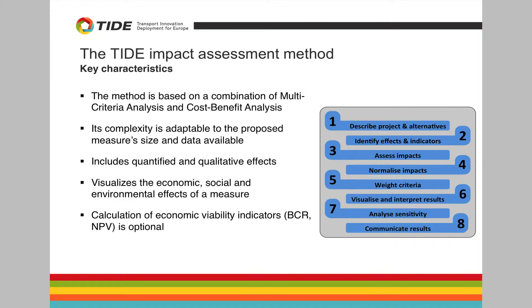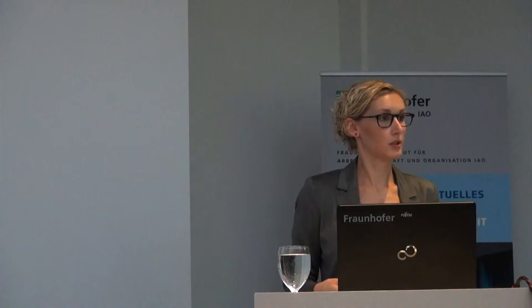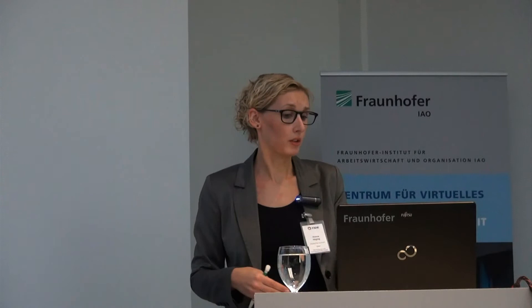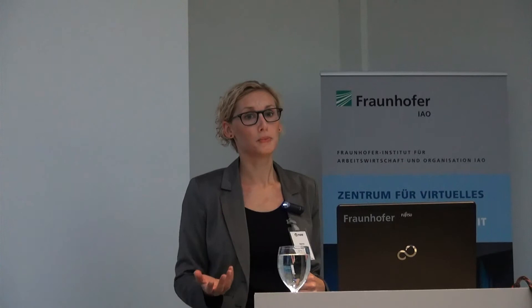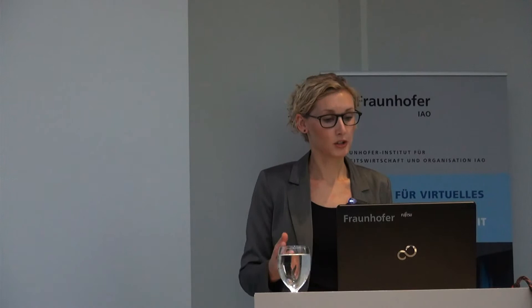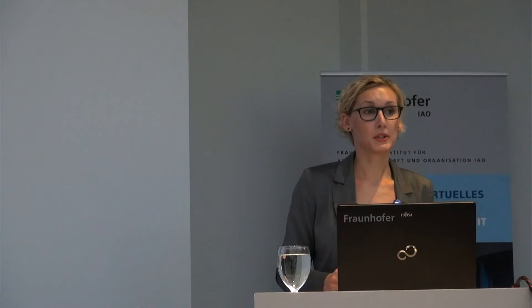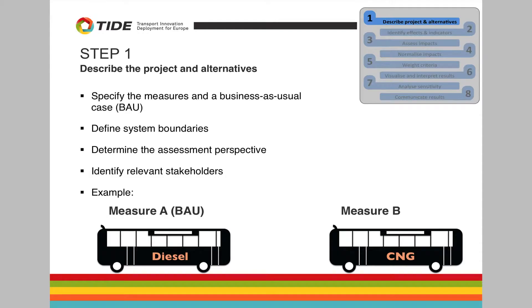The CHIDE impact assessment method includes effects that can be quantified as well as qualitative effects. A key characteristic is that it allows you to visualize economic, social, and environmental effects of a measure. Regarding the cost-benefit aspects, the calculation of economic viability indicators — such as the benefit-to-cost ratio or net present value, which are the key indicators in cost-benefit analysis — is optional. If it's a big measure or required by regulations, you can include these economic viability indicators, but it's not necessary because monetization takes a lot of time and effort. These are the eight steps, and now we'll go through each of them.